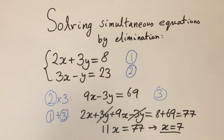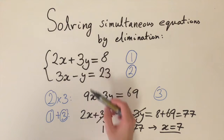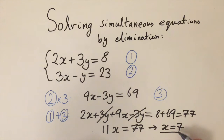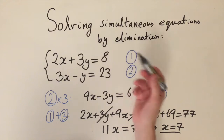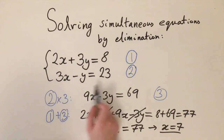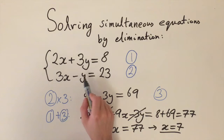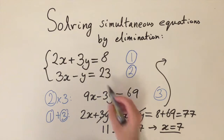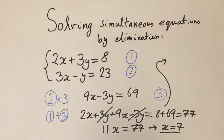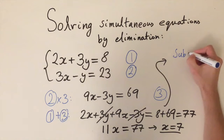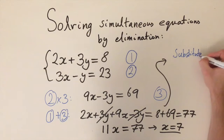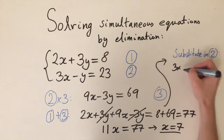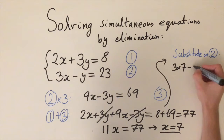That's half the solution — we also need to find the value of y. We substitute x equals 7 into one of the original equations. We'll use the second equation because it only has one coefficient of y, which makes it a bit simpler. So substituting into equation two, we get 3 times 7 minus y equals 23.